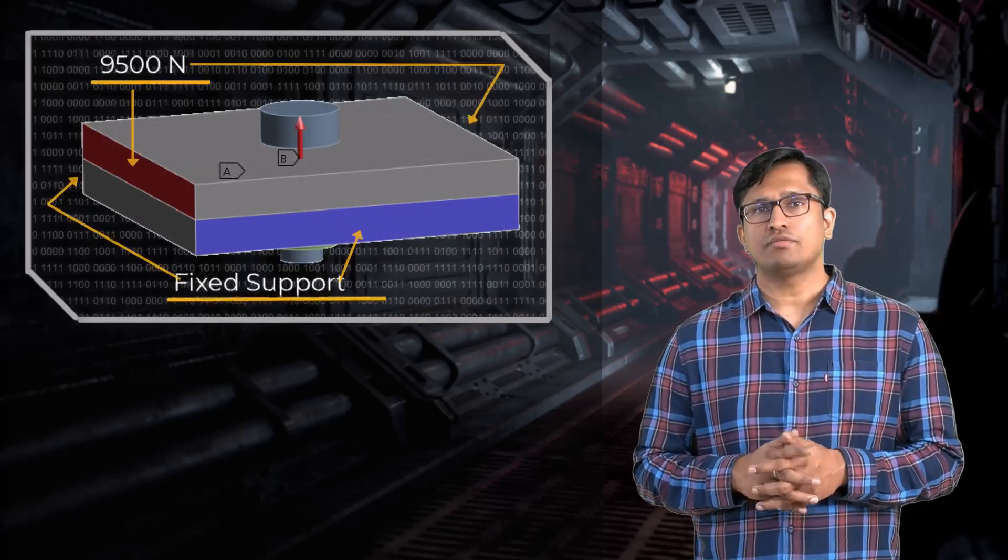Here we have a simplified model of a typical bolted joint. Assume that we have done some hand calculations of our design through which we have arrived at an estimate that the joint will experience an external load of 9500 N.